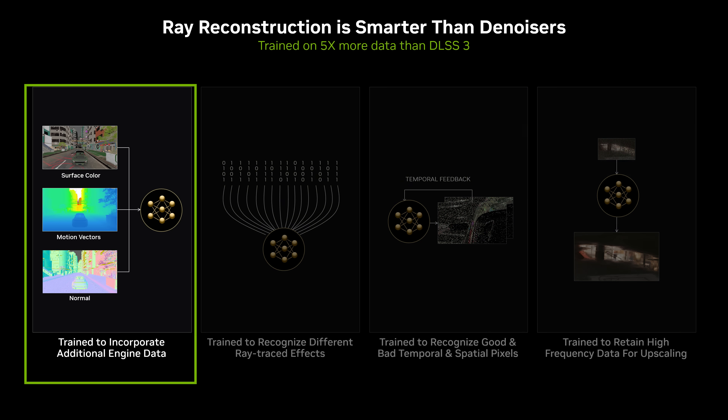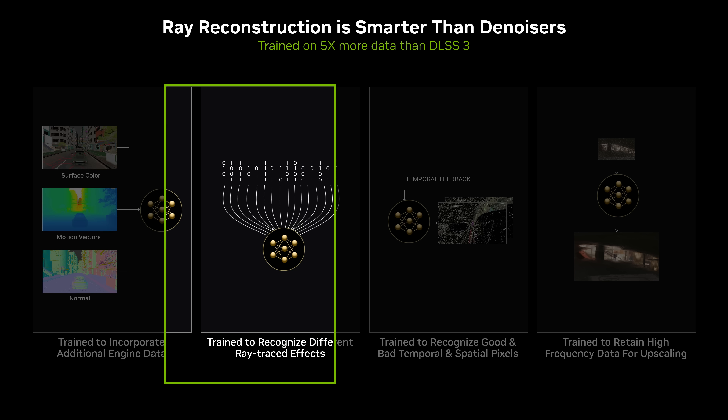DLSS 3.5 is trained on five times more data than DLSS 3. This was necessary because of the diversity of ray tracing effects that the model needs to recognize and work with.